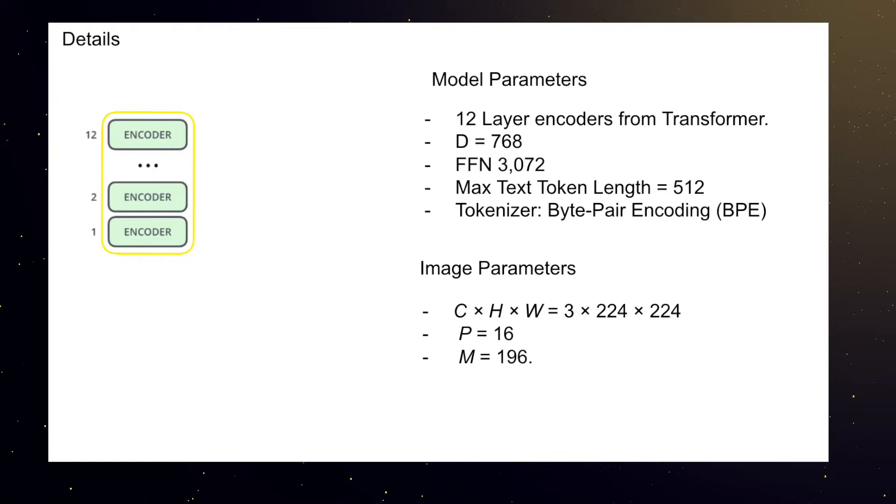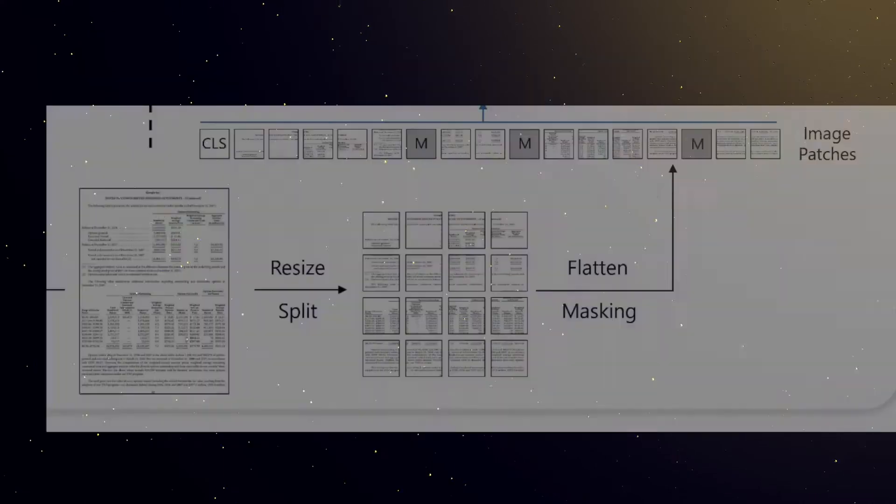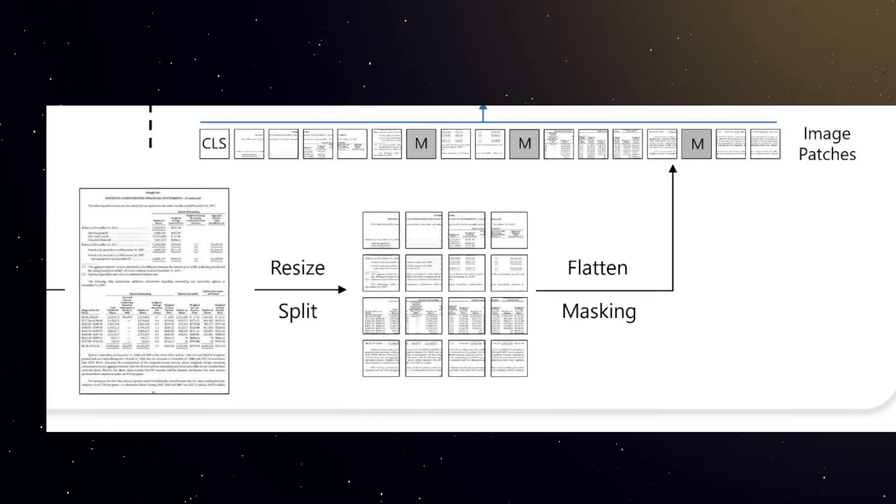This is a 12-layer transformer with these dimensions and these parameters for images. They also have a 24-layer version as well. Now according to the authors, the biggest difference between this architecture and previous versions is that this is much faster because of its image processing and how fast it is compared to the other versions.